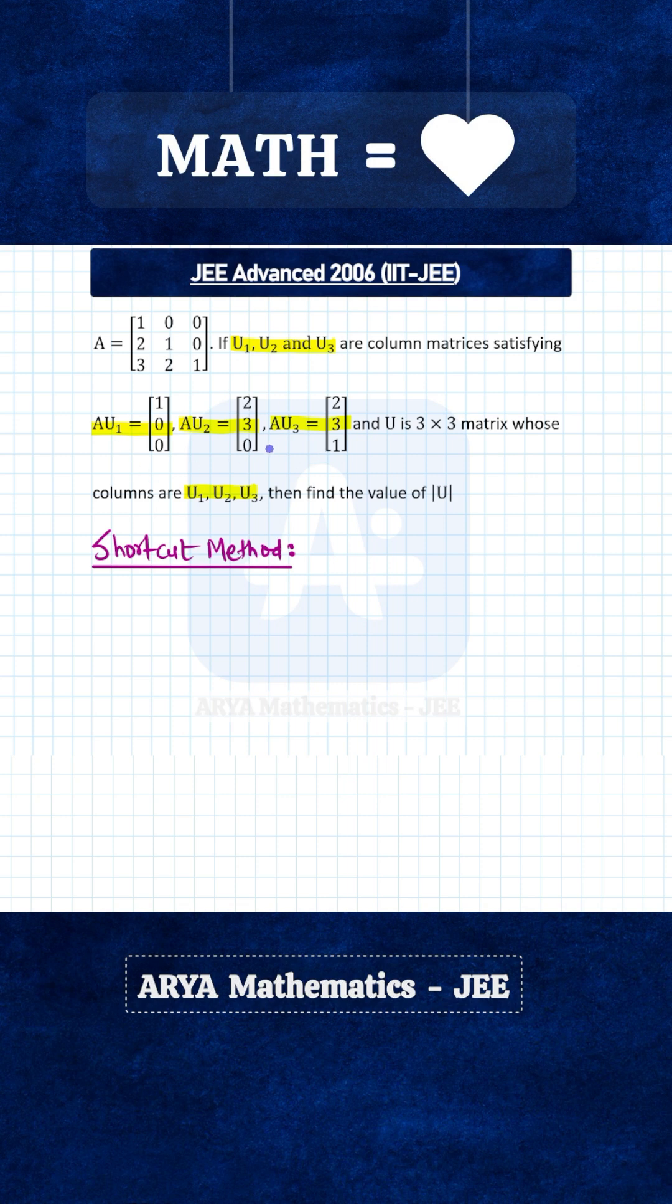Now this is a very interesting problem from matrices and determinant, and in this video we'll see a shortcut method of solving this problem. Here basically you can combine these three equations and you can write a matrix equation of the form A into some 3 cross 3 matrix equals to another 3 cross 3 matrix, and let me explain how we can write this equation.